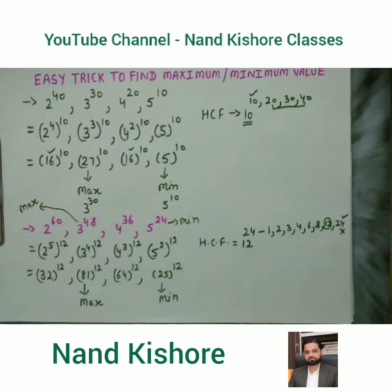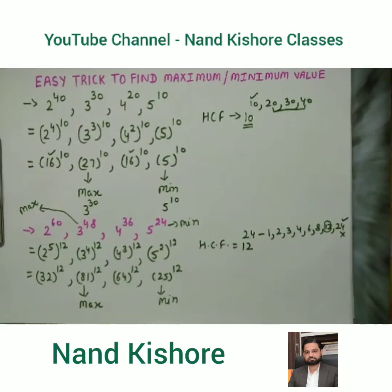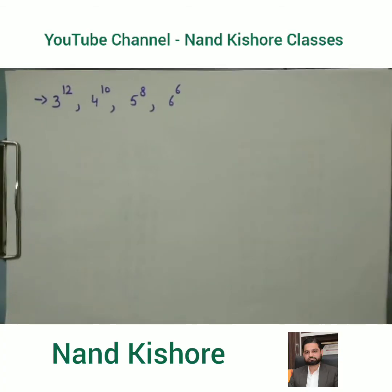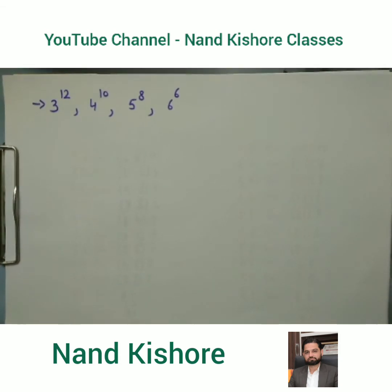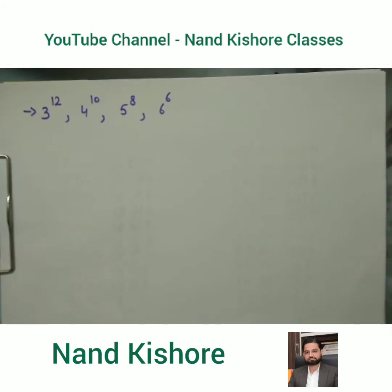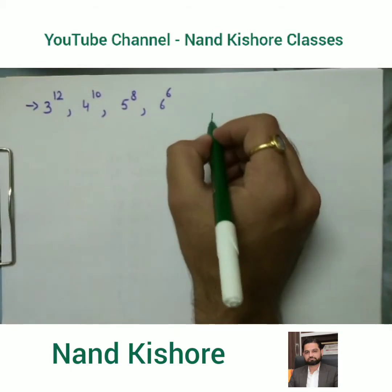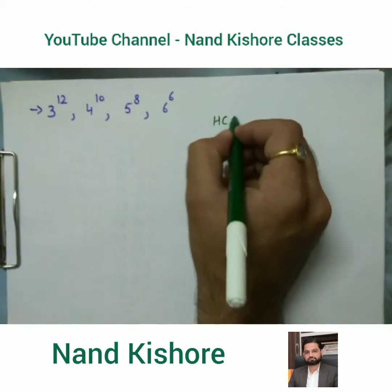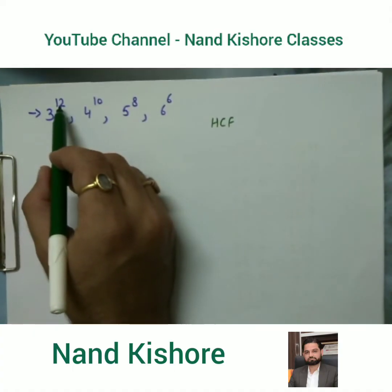It is very easy to find using this method. Let's do one more example: 3^12, 4^10, 5^8, and 6^6. We need to find the maximum and minimum value out of these. The first step is to find the HCF of the powers: 6, 8, 10, and 12.